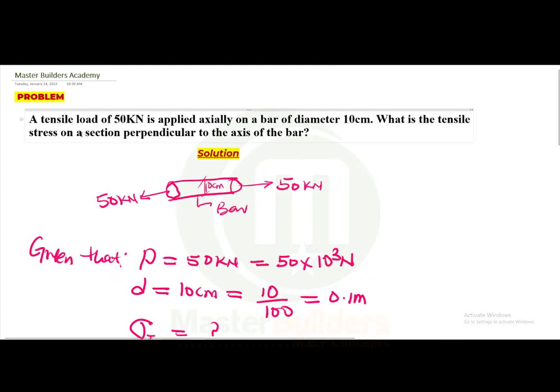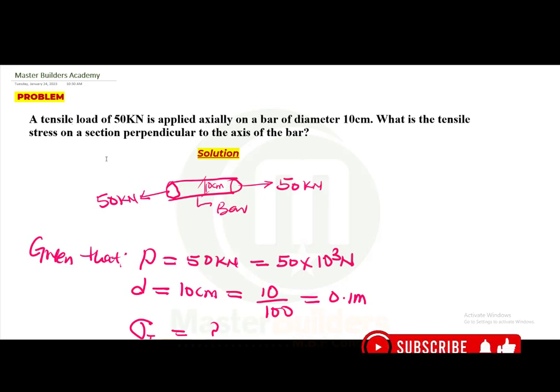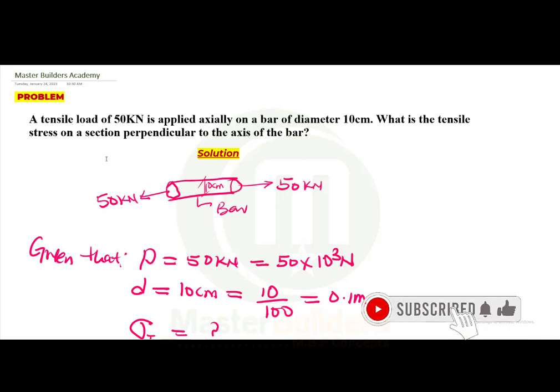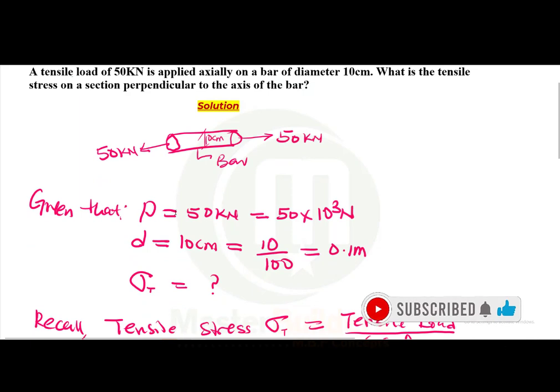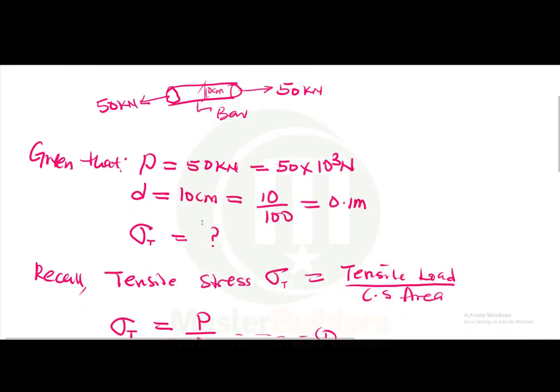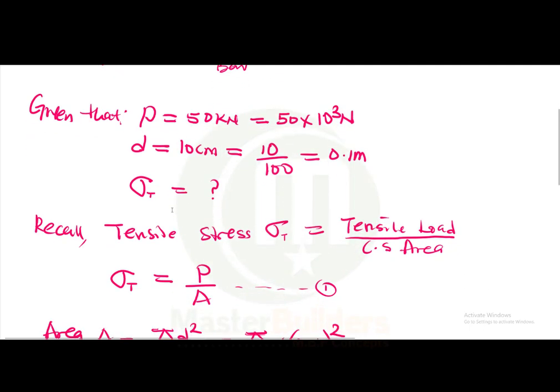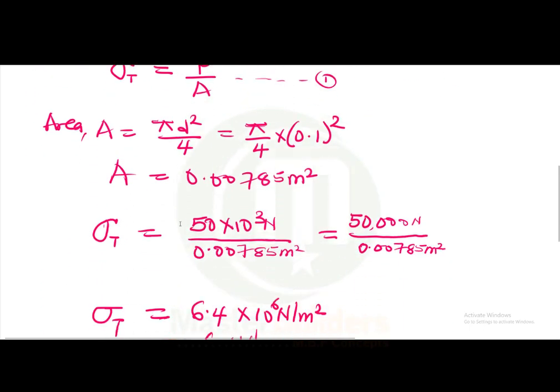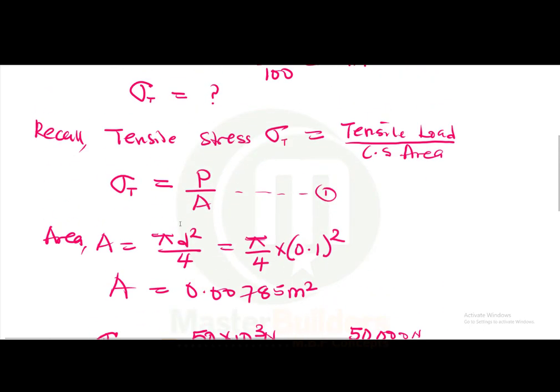So guys, you see how easy it is to solve a problem like this in strength of materials. Like I always tell you, strength of materials is not actually hard. It's something very simple: application of formulas and you are good to go. All you need to do is to interpret the question very well, state the given parameters which include the known and the unknown, and you will be able to trace the exact equation that connects the known parameters and the unknown parameters. By this you will be able to provide an answer to this question like we have done.